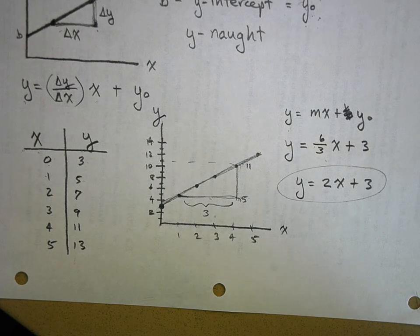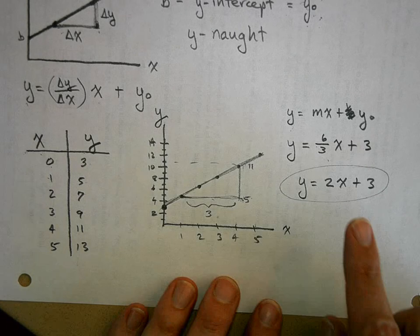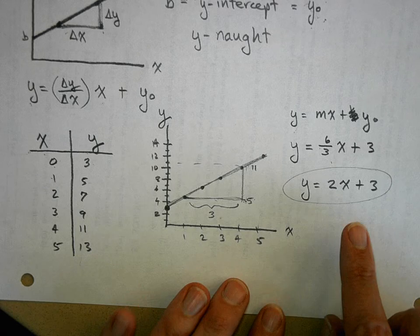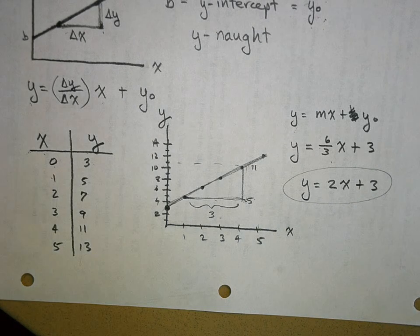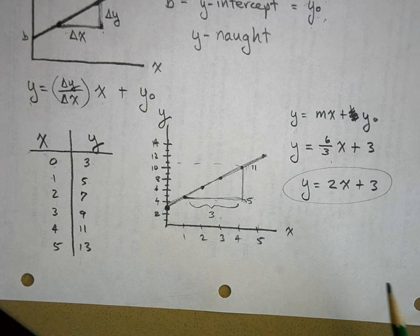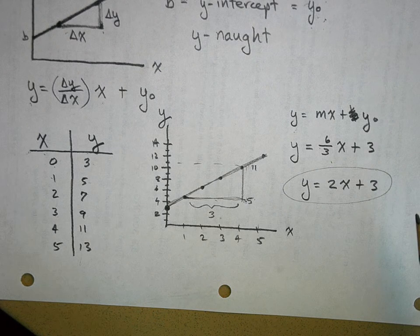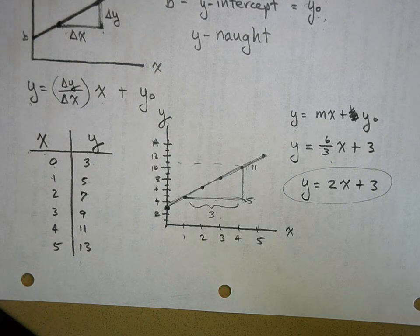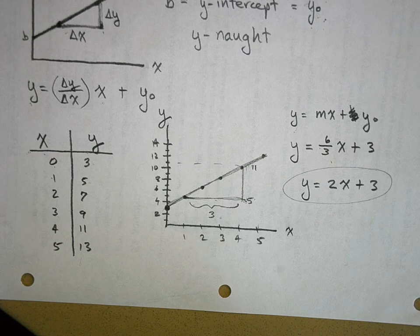Next time, we're going to go through this process — look at data, graph it, and create a mathematical model. But we're going to modify things: we don't use Y and X every time. We'll use letters that represent the actual quantities we're measuring. We're also going to include units with our numbers, because when we make measurements we have units — seconds for time, centimeters or meters for length, and so on. We'll do that at the beginning of class next time.